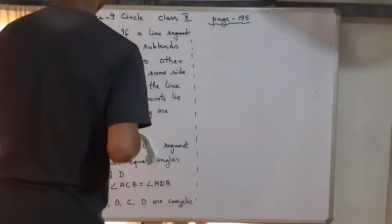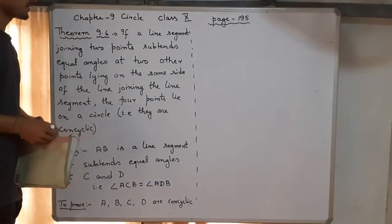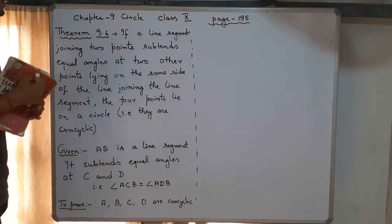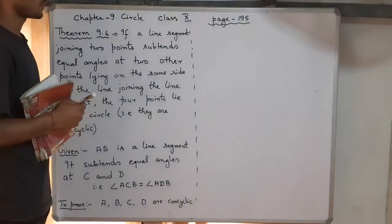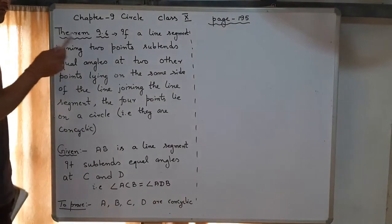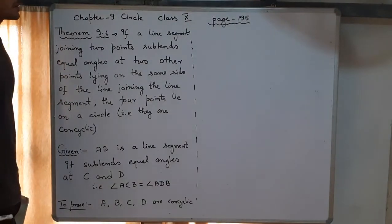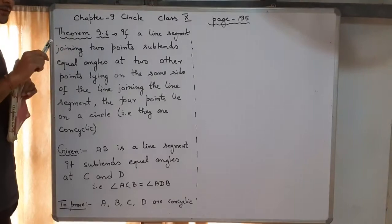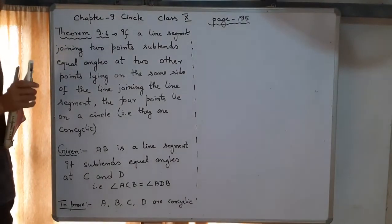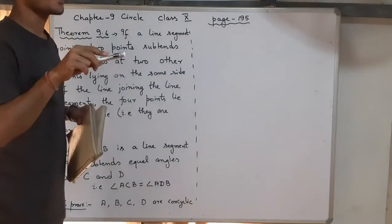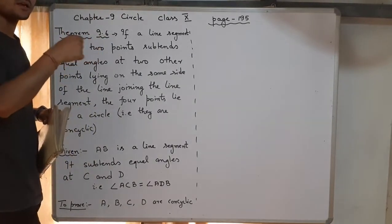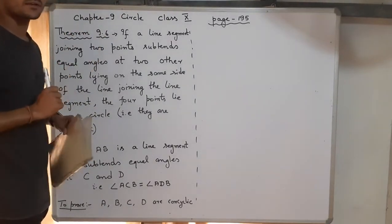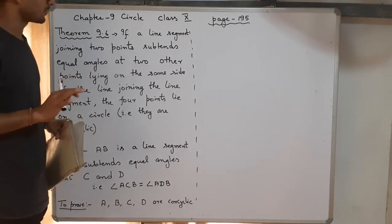We will begin today with Theorem 9.6 of Chapter 9 on circles, from MBC page 195. This is the converse of Theorem 9.5. If you remember, 9.5 stated: if there is a circle and a line segment, and you make any two points on the same side of the circle and form angles, those angles will always be equal.